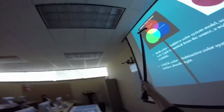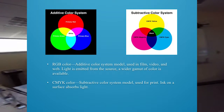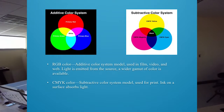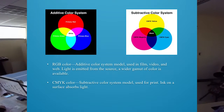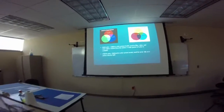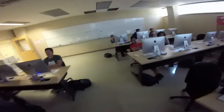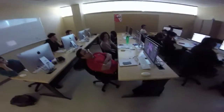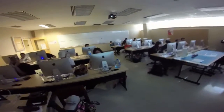The additive and subtractive color systems. RGB is the additive color system used in film, video, and web — light is emitted from the source and a wider gamut of color is available. CMYK is the subtractive color system used for print — ink on a surface absorbs the light, which is why it's called subtractive. Do not use CMYK color in video and don't try to import a CMYK image into After Effects — it doesn't work right.